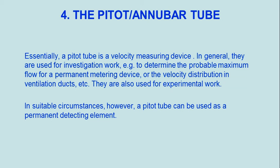The pitot/annubar tube — essentially a pitot tube — is a velocity measuring device. In general, they are used for investigation work, for example to determine the probable maximum flow for a permanent metering device, or the velocity distribution in ventilation ducts. They are also used for experimental work. In suitable circumstances, however, the pitot tube can be used as a permanent detecting element.